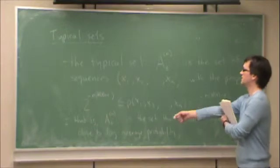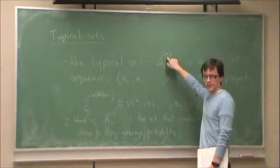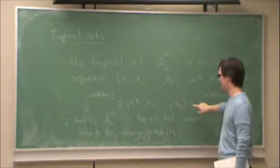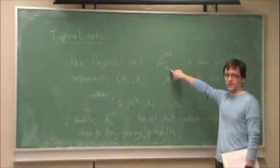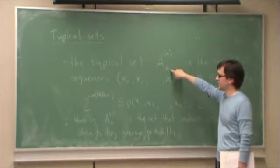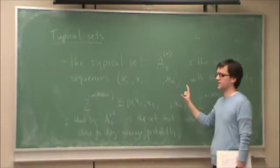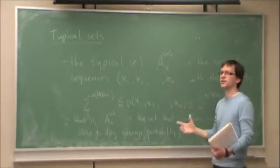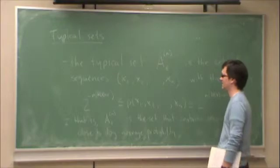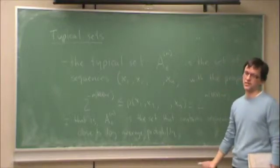What we're going to show is that as N becomes very large, this set contains basically all of the likely sequences. As far as source coding is concerned, we can focus our efforts on this set and ignore everything outside of it, because everything outside of it occurs with vanishingly small probability.